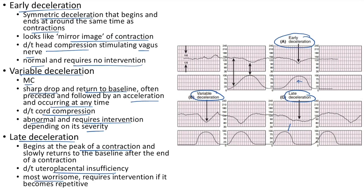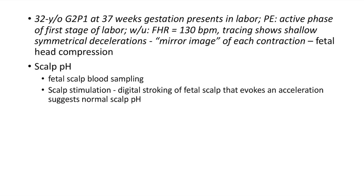Clinical case: 32-year-old G2P1 at 37 weeks presents in labor. Examination shows active phase of first stage. Fetal heart rate is 130 bpm. Tracing shows shallow symmetrical decelerations like mirror image of each contraction — this is early deceleration due to fetal head compression. It is normal, and no intervention is needed.